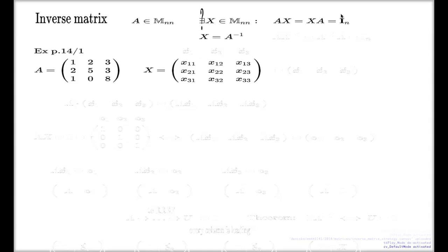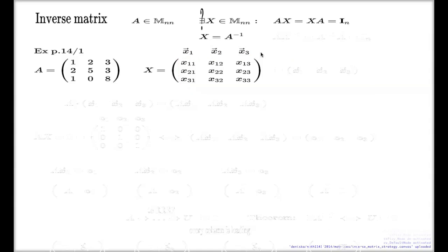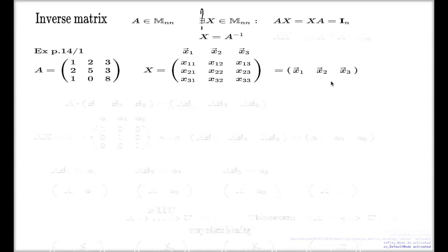Let me show you one efficient way to do it. We're going to treat the unknown matrix X with its unknown components as columns. I'll take the columns and give them names: first column vector X1, second column vector X2, third column vector X3. Here is my unknown matrix written in column fashion — first column, second column, third column.